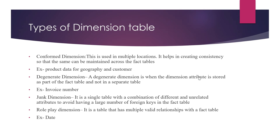Now the types of dimension tables. One of them is the conformed dimension. A conformed dimension is used across multiple locations and helps create consistency so that the same data can be maintained across fact tables. A good example is product data across geography and customers. Suppose you are buying an HP or Lenovo laptop — that laptop's name and other details will be the same whether you go to the US, India, or any other country. Geography doesn't change it. Things that cannot be changed across multiple locations are called conformed dimensions.